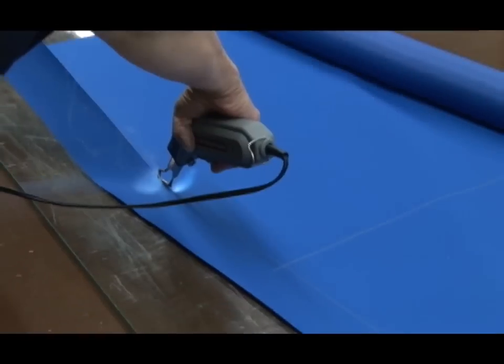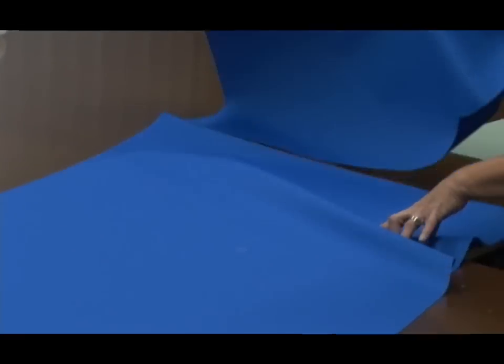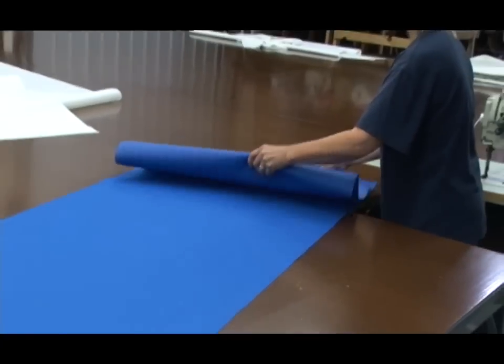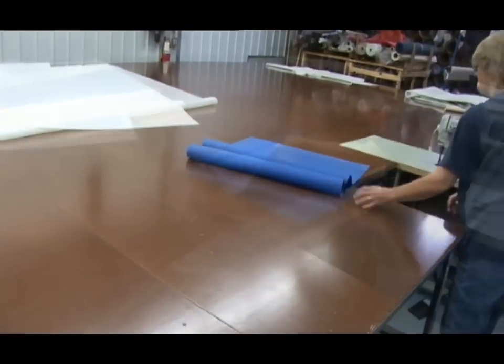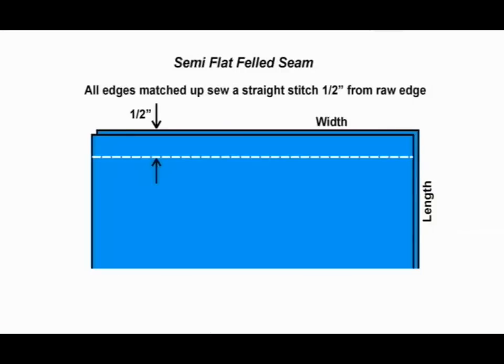Here you see Deb using a hot knife to cut out these long strips, but you can also use scissors. A hot knife helps prevent unraveling. Now she lays the panels on top of each other with the finished side facing each other and now she'll create that semi-flat-filled seam.